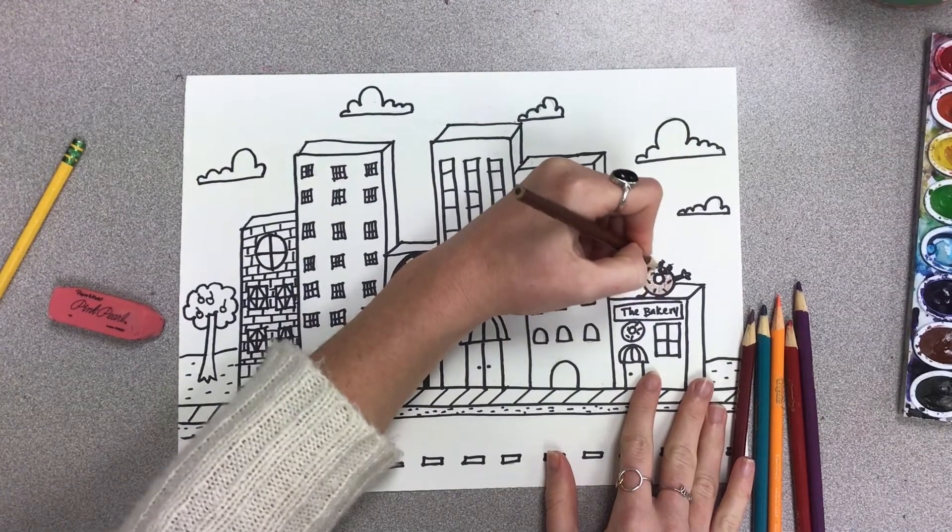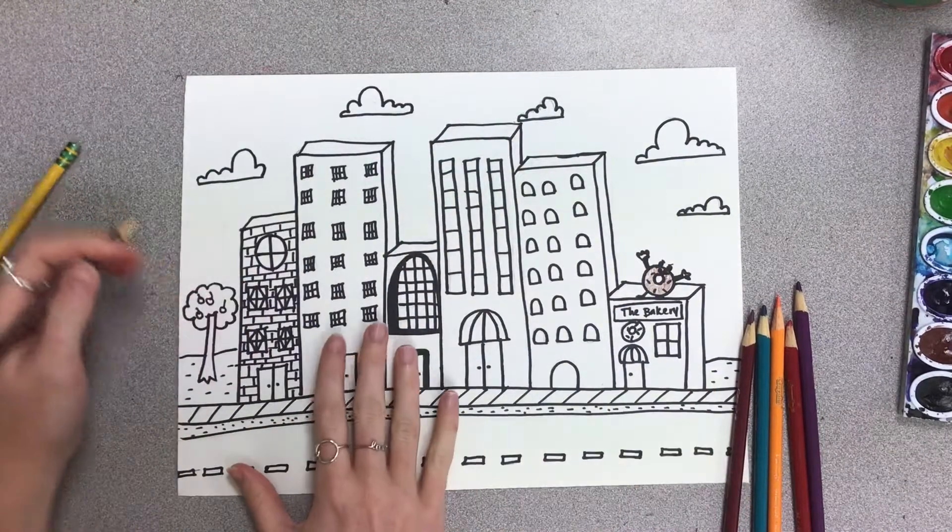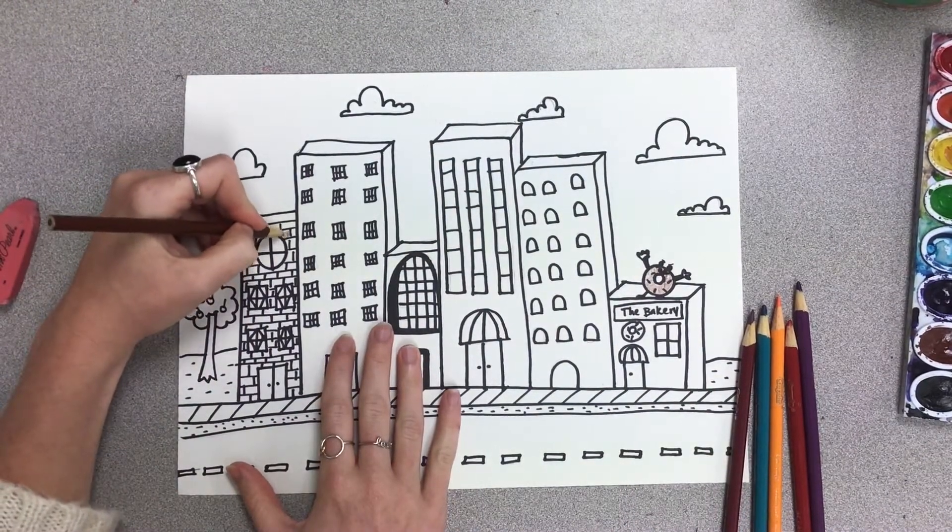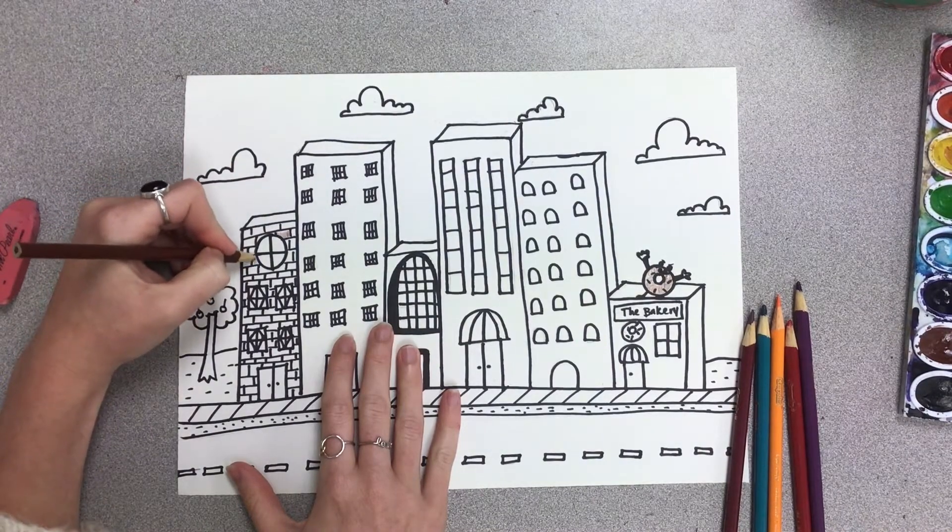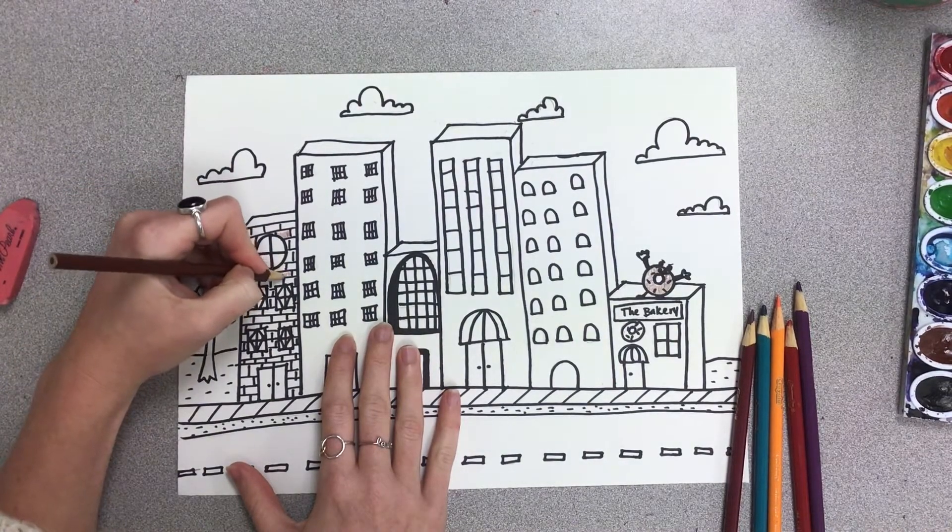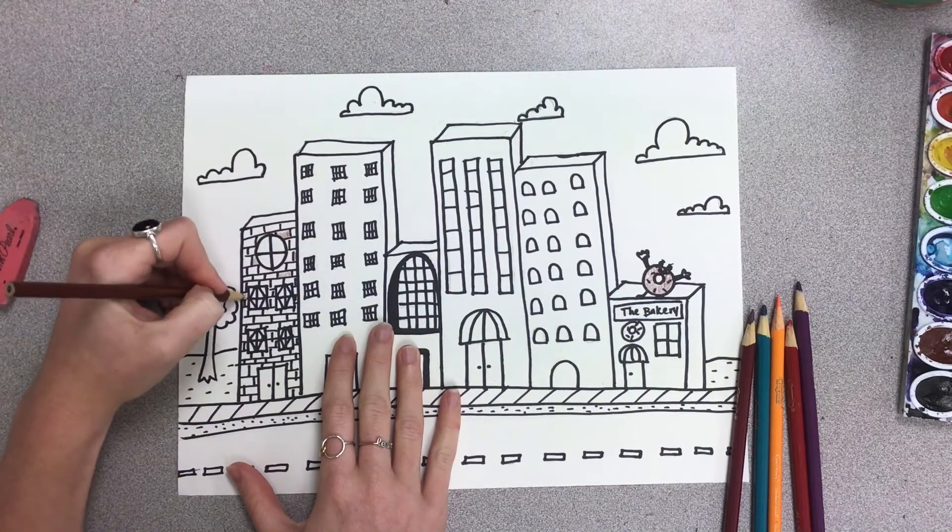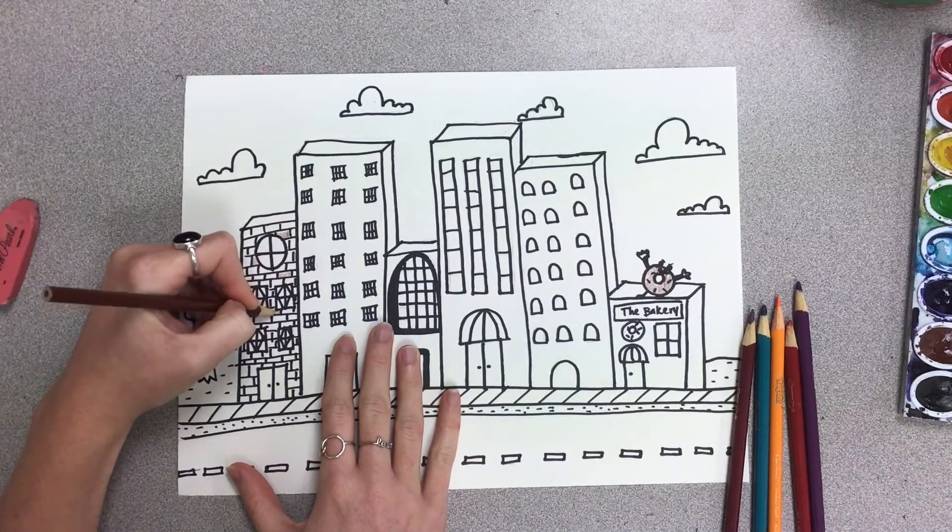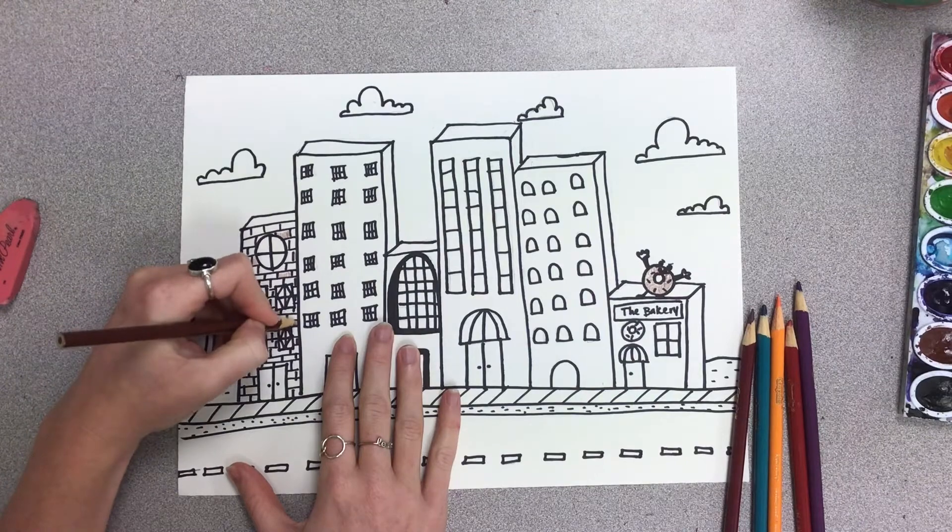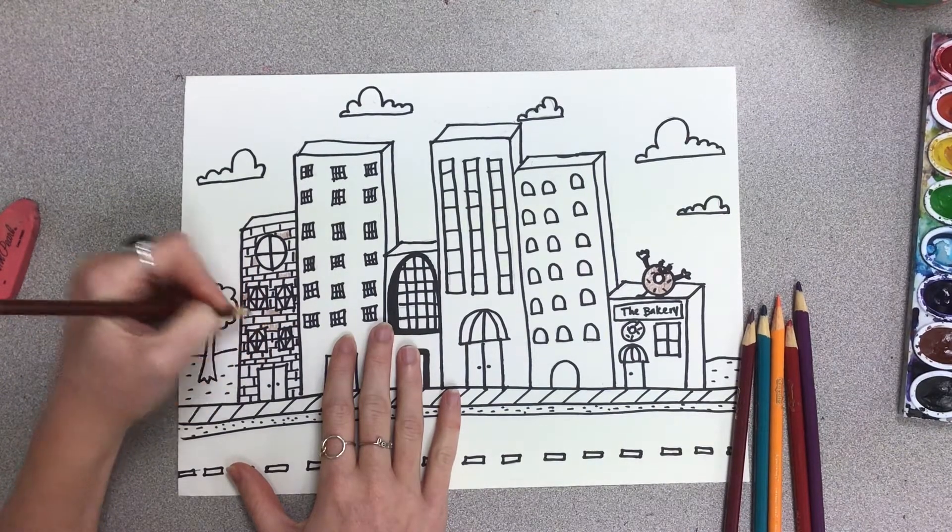Once you have your ideas and your buildings the way that you want them, you're going to color them in. I am using colored pencils. You can use crayons, markers, anything that you have available to you. You can even paint the different buildings if you would like to. It's up to you how you decorate them.